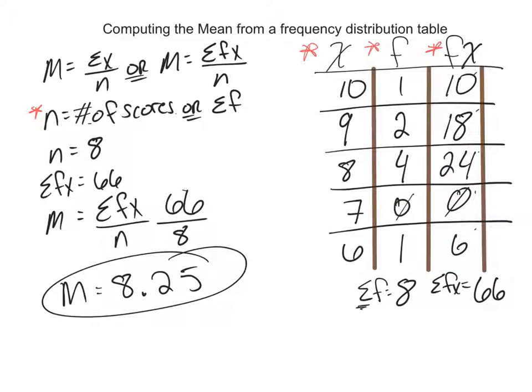You don't hear the term sum of f of x a lot in statistics classes or statistics books. I was taught it when I was learning statistics, so it's a little trick that I use. Technically mean is sum of x divided by n, but if you want to think of it like sum of f of x divided by n makes it easier.